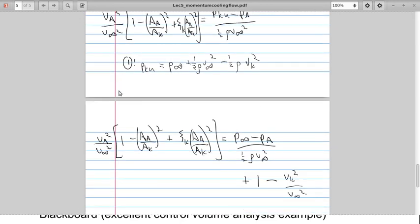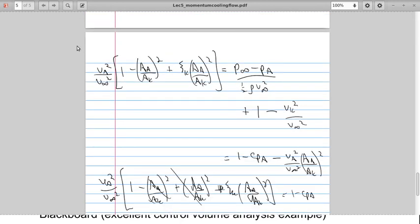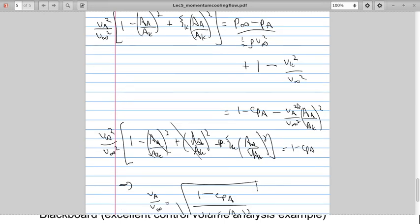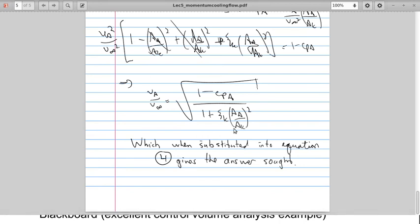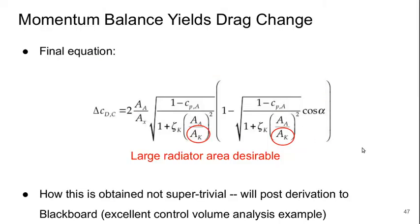I then have to rearrange and at the end of the day finally get an equation for VA over V infinity which is 1 minus Cp at point A over 1 plus the loss coefficient times A over A over A squared. Which when substituted back into equation 4 gives the answer that we are seeking here.